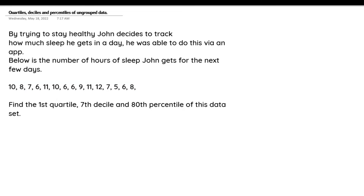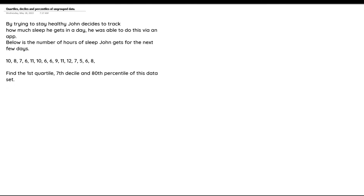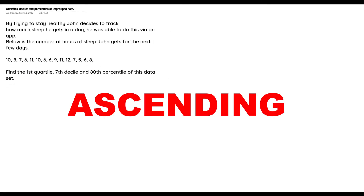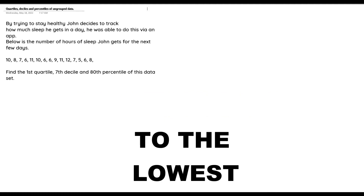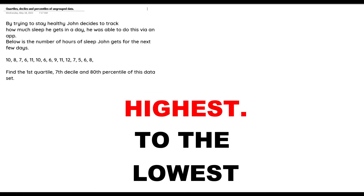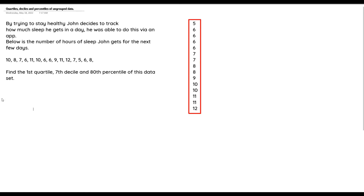The first step is for us to arrange our data set in ascending order — that means from the lowest down to the highest. So let's arrange our data set in ascending order, and this is what our distribution looks like.